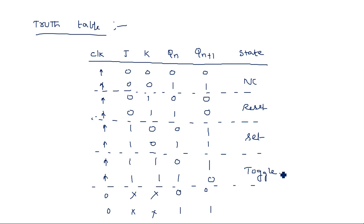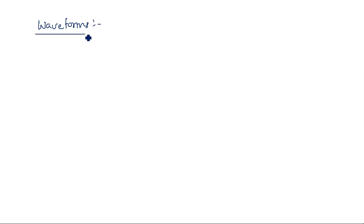This state is known as the toggle state — the complement of the previous state. When the clock is zero or having a falling edge, it is the no-change state — whatever the previous state is, the same is going to be continued. For better understanding we will draw the waveforms.